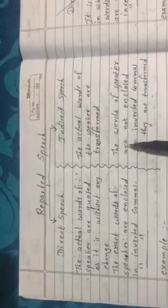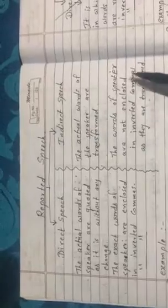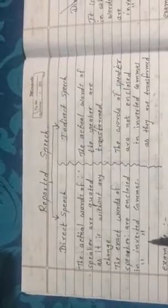Now what is indirect speech? The actual words of the speaker are transformed. Whatever direct speech same-to-same words are there, that will be transformed by following some rules. The words of the speaker are not enclosed in inverted commas as they are transformed. In indirect speech, inverted commas will not be there. Now let us see an example.